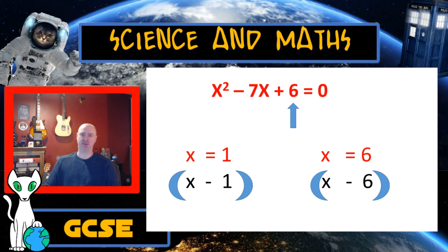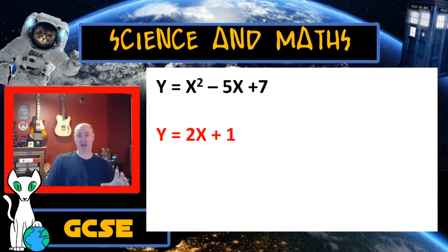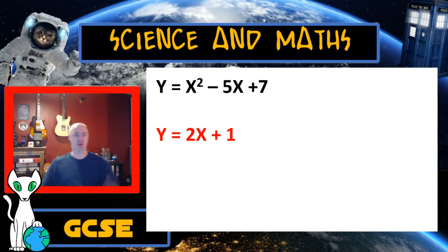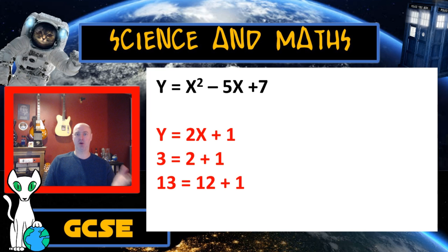Now that I've got my two values of x, how do I find what y is? I take those values of x and substitute them into the linear equation y equals 2x plus 1. We have two values for x, so we'll get two values for y. When x equals 1: y equals 2 times 1 plus 1, so y equals 3. When x equals 6: y equals 2 times 6 plus 1, so y equals 13. So when x equals 1, y equals 3; and when x equals 6, y equals 13.